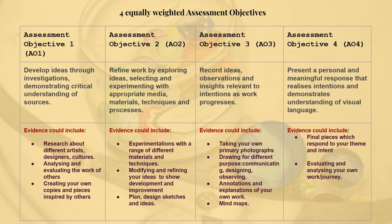GCSE art has four assessment objectives and you need to show evidence that you meet them all. They are all equally weighted, each marked out of 24 marks. Assessment objective one is looking at different artists and designers and developing your ideas for your chosen theme. Assessment objective two is refining, exploring, and developing your ideas, media and techniques — experimenting with a lot of media and techniques. Assessment objective three is recording your ideas and observations through drawings, annotations, and mind maps. Assessment objective four is creating a final outcome which is very personal to you. You are also required to do some written work in the form of mind maps, annotations, and artist research.